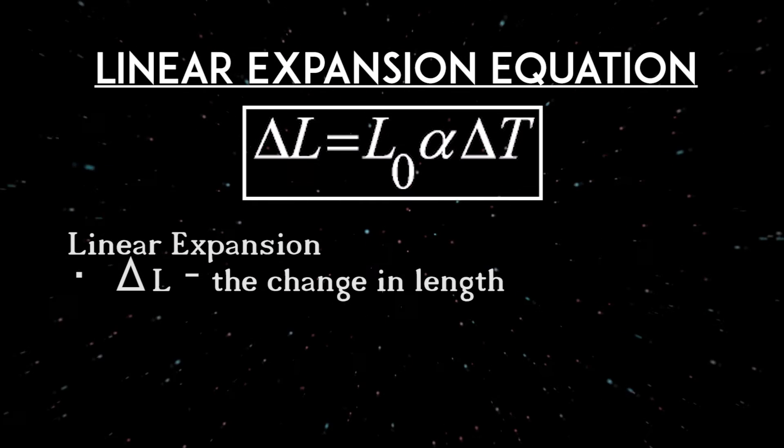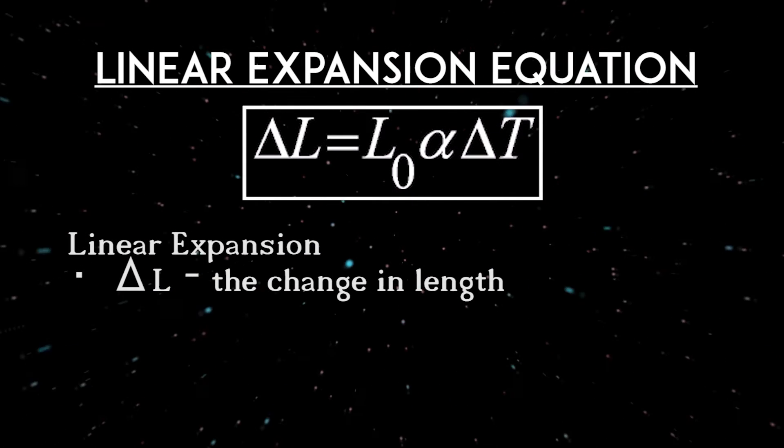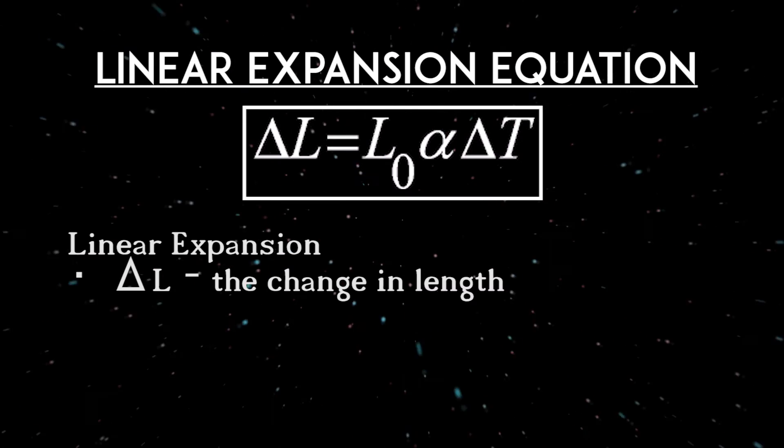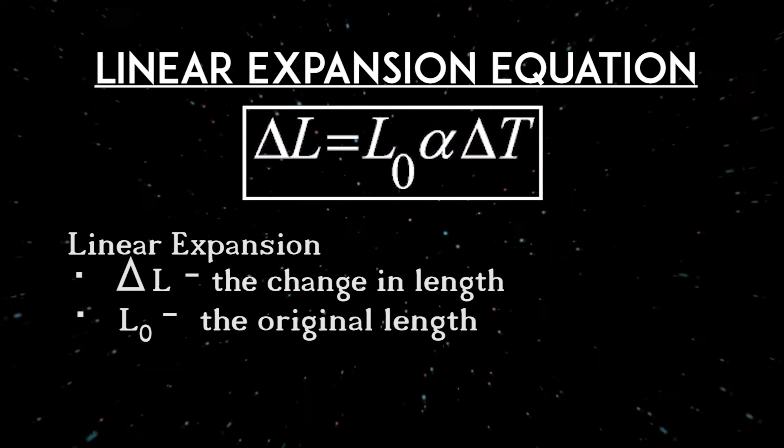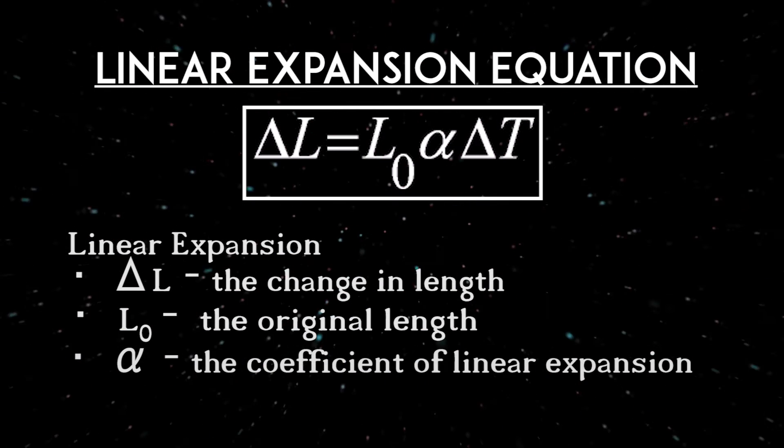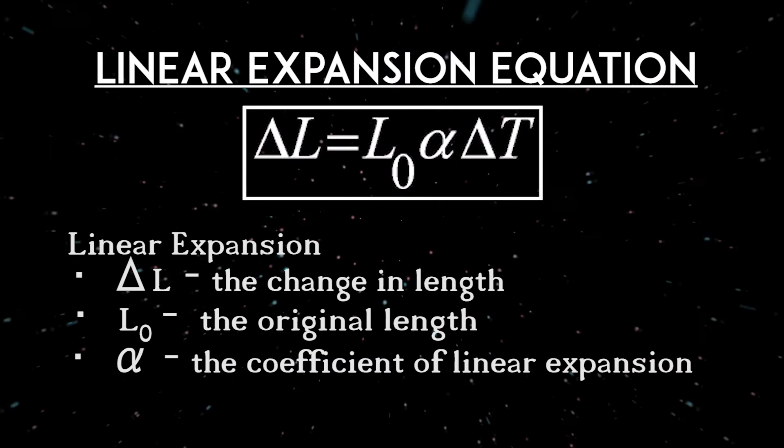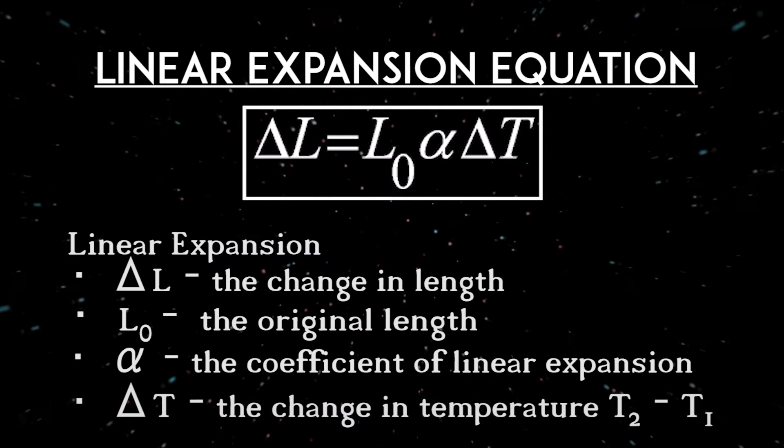The change in length, delta L, of a solid, say a rod for example, is given by the original length L0 times alpha, the coefficient of linear expansion, times delta T, the change in temperature.